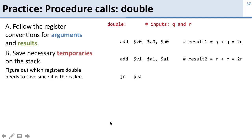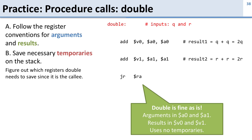Now let's look at double. For double we're lucky — everything is already set correctly. The arguments are in a0 and a1, which is correct, and it returns results in v0 and v1, exactly as expected. So we don't have to change anything for double.